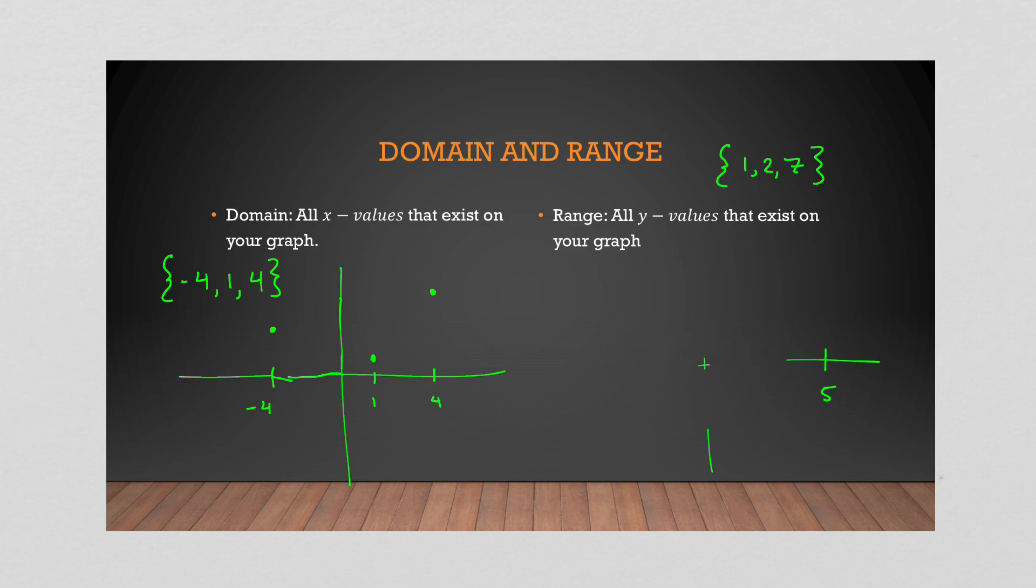The next example was if we had a continuous line in either direction. So let's just say we had our graph, and again, we had something that looks like that. Well, again, this line is extending up and down infinitely in either direction. So this will be another example of all real numbers. So so far, we haven't had to worry too much about anything.